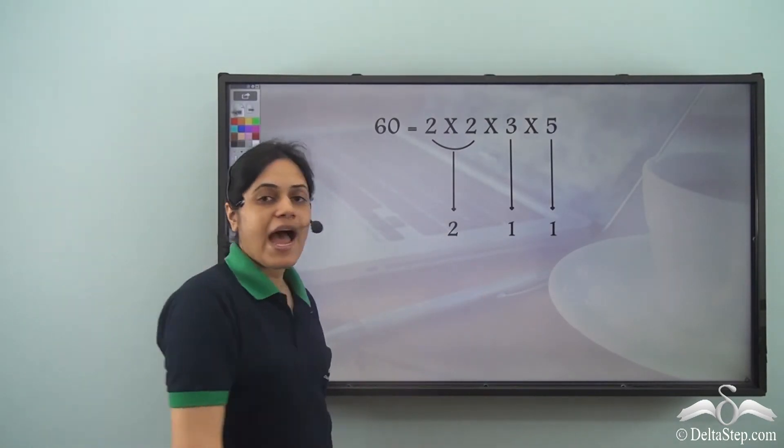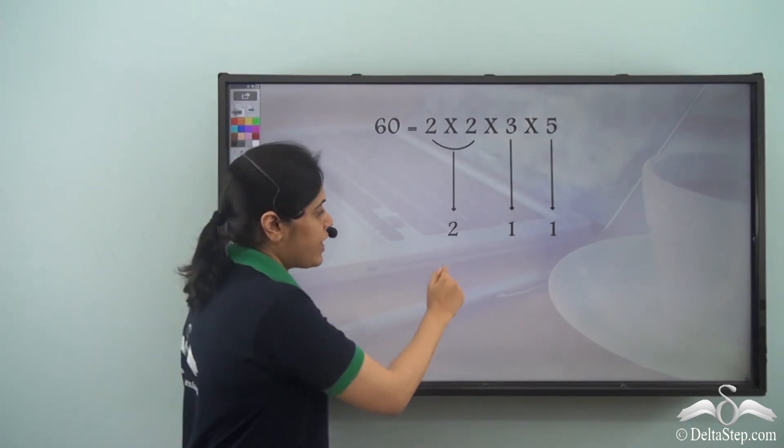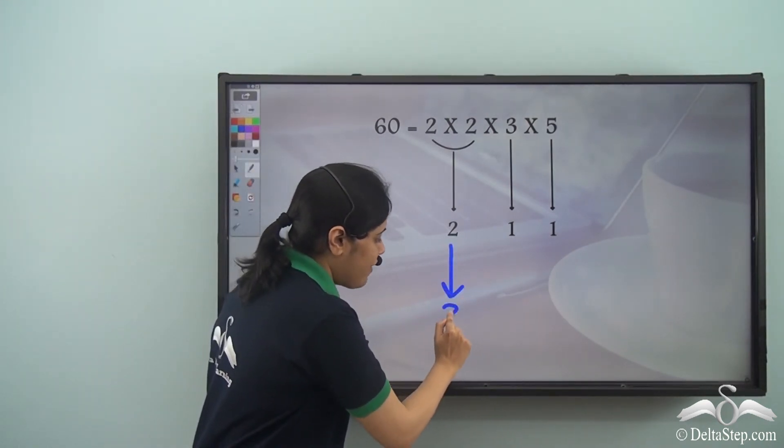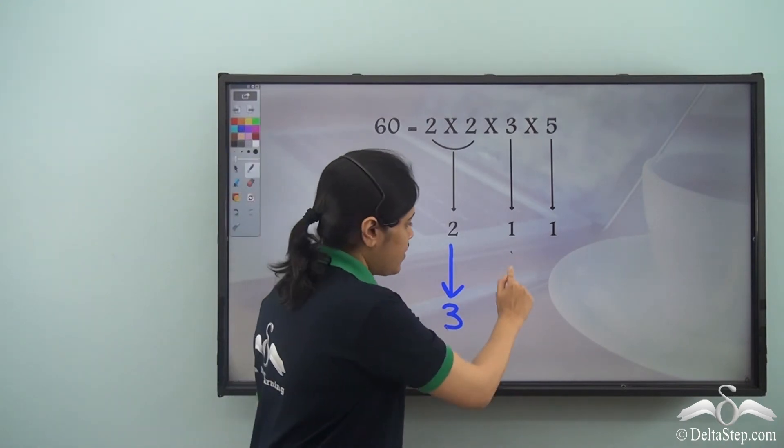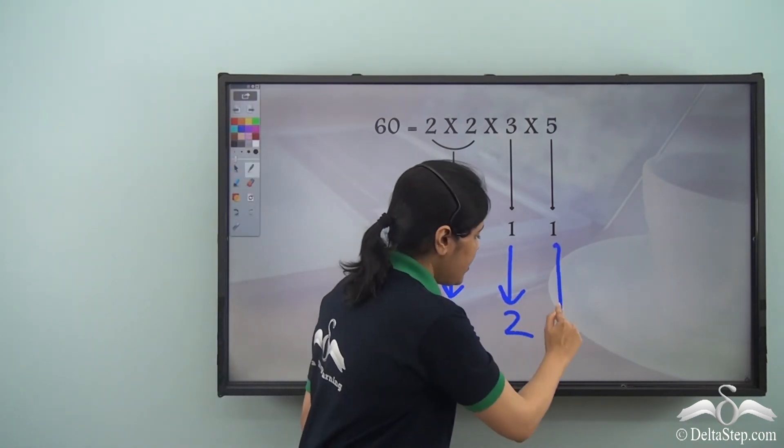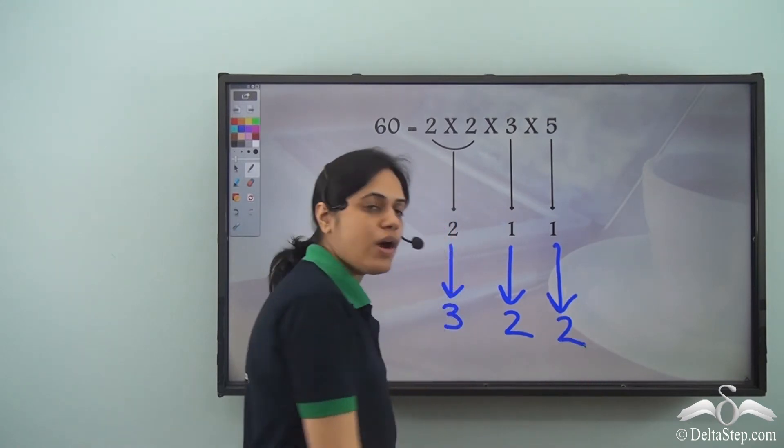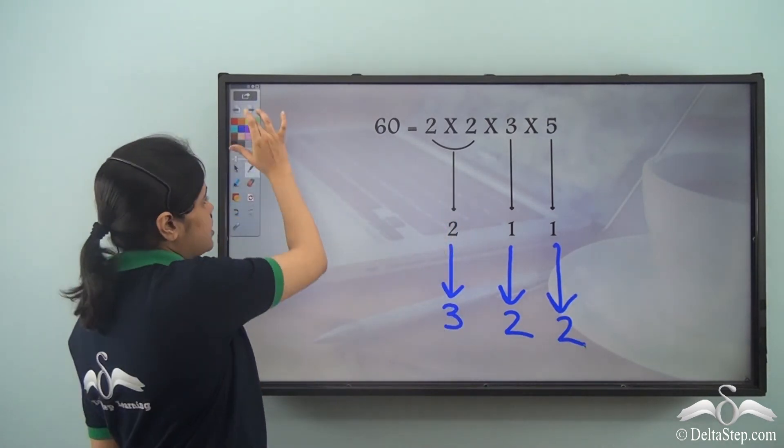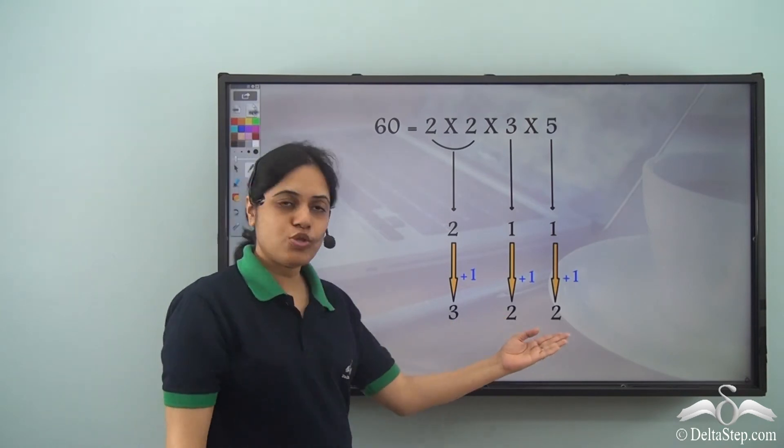Now what if I add 1 to each? So if I add 1 to 2 I will get 3. 2 plus 1 is 3. 1 plus 1 is 2, and 1 plus 1 is 2 again. So this is what I have: 3, 2, and 2.